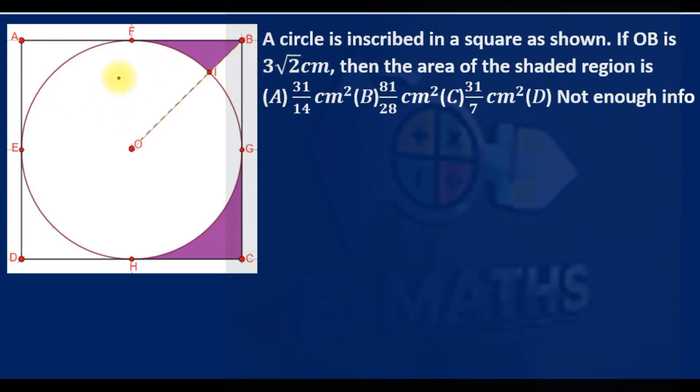Okay, we are given the diagram where a circle is inscribed in a square as shown. If OB is 3√2 cm, then the area of the shaded region is...